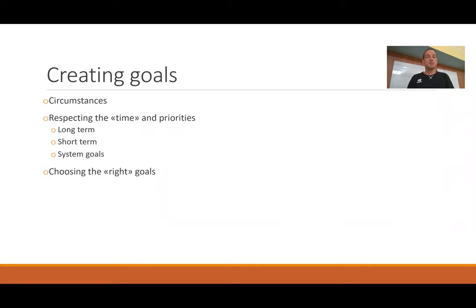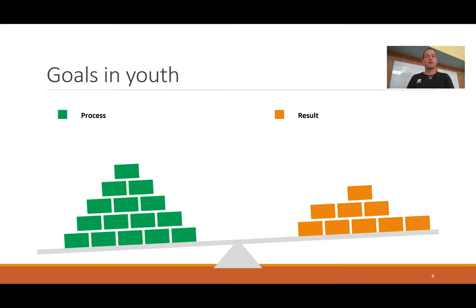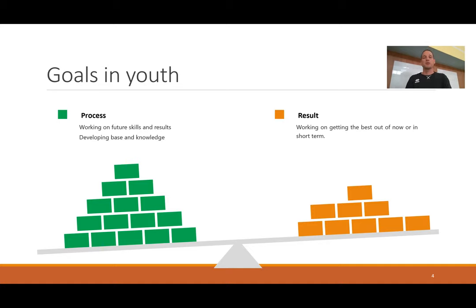The biggest mistake is trying to force what exists into a goal you wish to have which is not realistic. It's about adapting — reading the situation, finding solutions, being creative. In youth, you have more process goals than result goals: you're working for future skills, developing a base and knowledge over time. But the result should never be zero, even in youth. When playing, youngsters need to understand that if I play, I play to win — but we can add a game plan element as a process goal while still caring about the result.